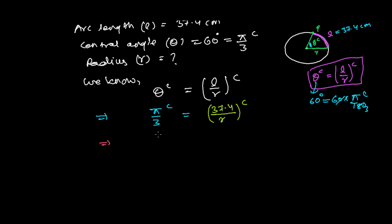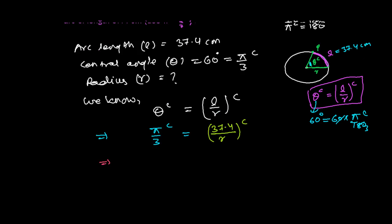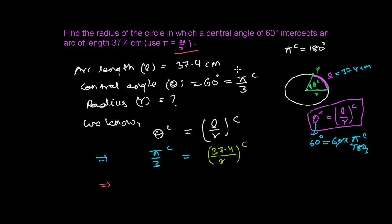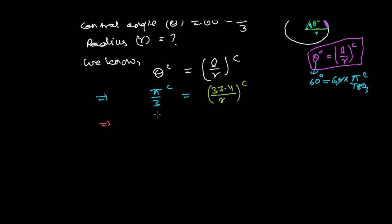The question says to use π as 22/7. So π/3 equals 37.4/r. Rearranging: r equals 37.4 divided by π/3, which is 37.4 × 3 ÷ π. Substituting π = 22/7, we get r = 37.4 × 21 ÷ 22.